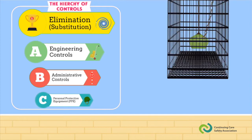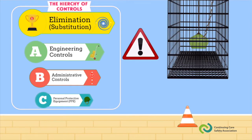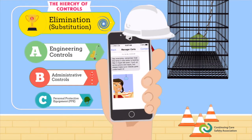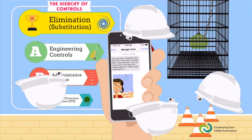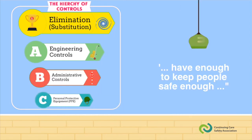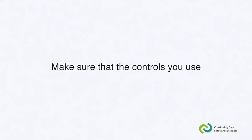Do we need a chain, plus a cage to catch the lamp, plus a sign that cautions people, plus pylons, plus a message from management, plus helmets for everybody who walks by — just for a light? Of course not. But you should make sure that you have enough to keep people safe enough. And the only way to do that is to make sure that the controls you use actually work.